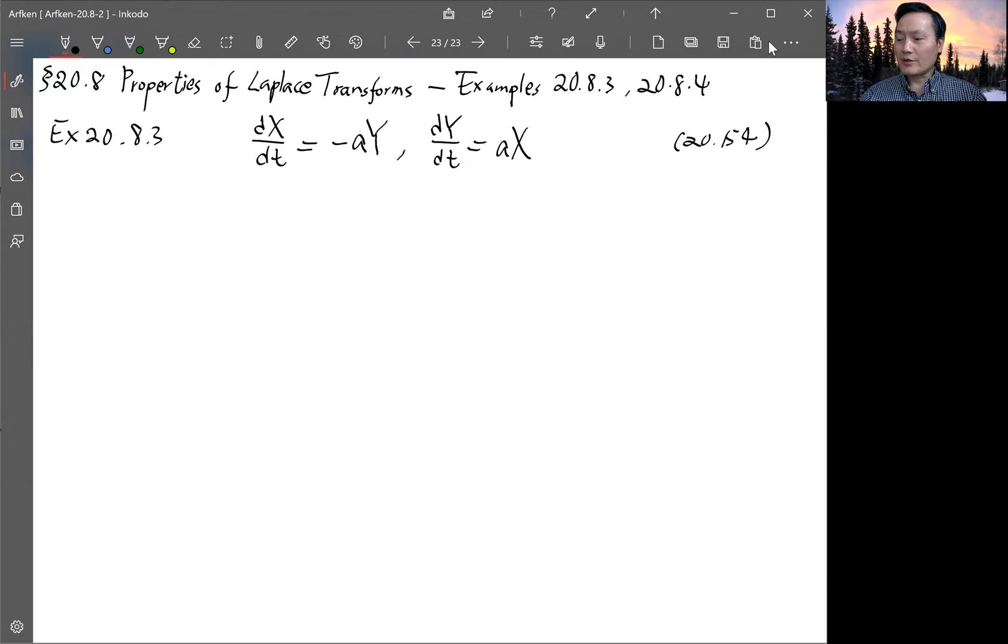So when you take the Laplace transform of the derivative, you get S times the Laplace transform minus the initial condition. So what we have is S times little x minus the initial condition for x equals to minus a capital Y. And then similarly, S times little y minus y₀ equals to a capital X. So we have that kind of equations. So this is nothing but two linear equations for x and y.